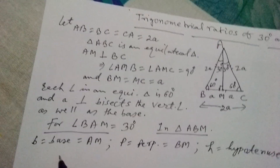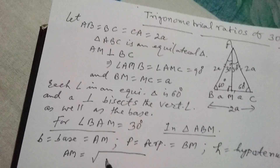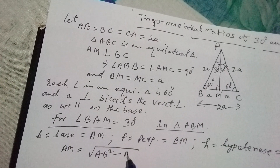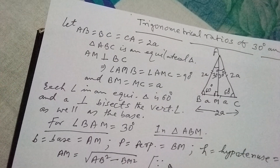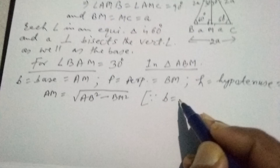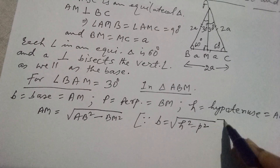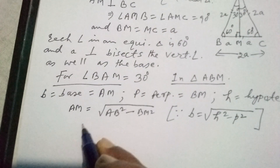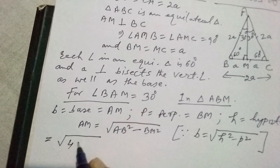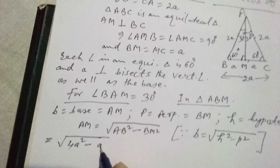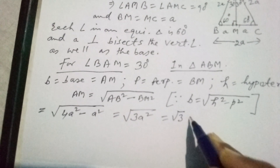Now we find AM, because the value of AM is unknown. AM equals the square root of AB squared minus BM squared, applying the Pythagorean theorem where base equals the square root of H squared minus P squared. AB equals 2A, so we get 4A squared; BM equals A, so we get A squared. Therefore AM equals the square root of 3A squared, which equals √3·A.